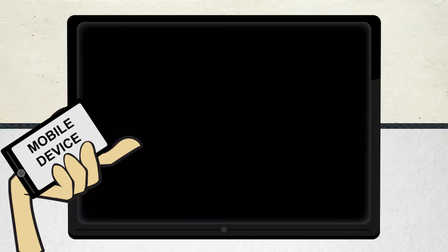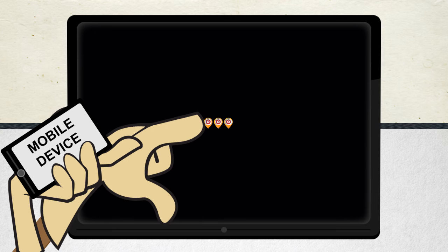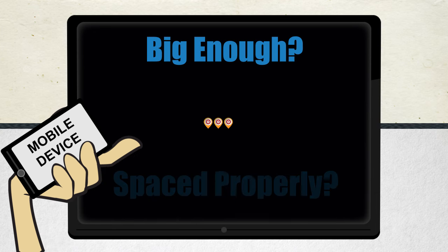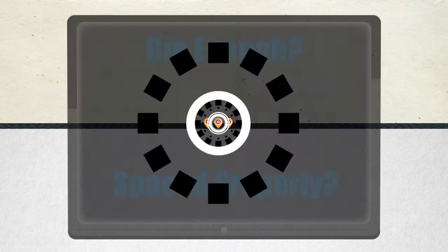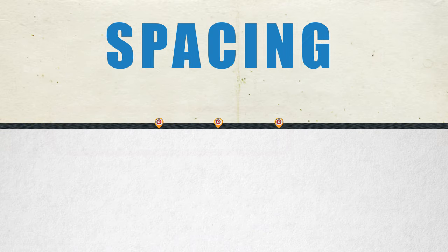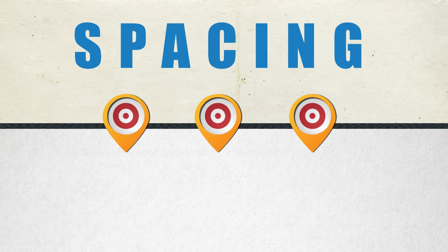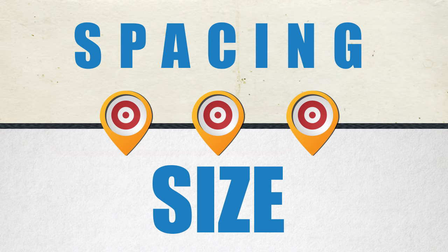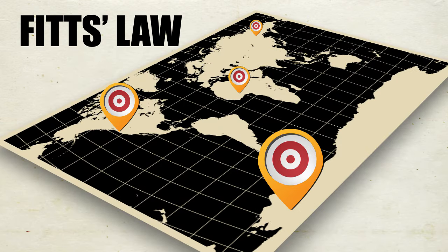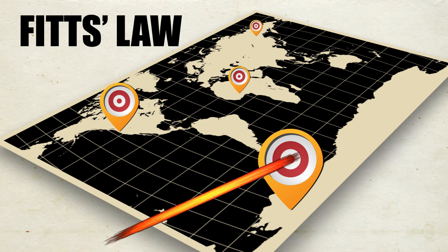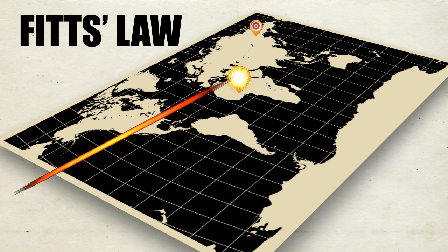Keep in mind the devices that your customers are using. If you're developing a touchscreen interface, ask yourself: are the elements big enough and spaced properly to allow your user to pick just one? The spacing between on-screen elements is just as important as the size of the elements. Remember Fitts' Law — it's faster to hit larger targets closer to you than it is to hit smaller targets farther from you.